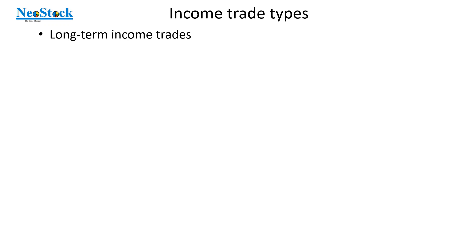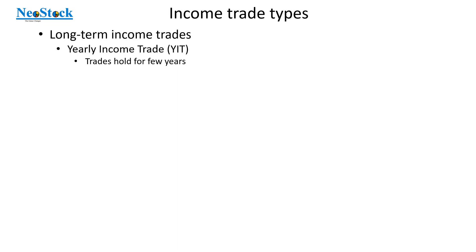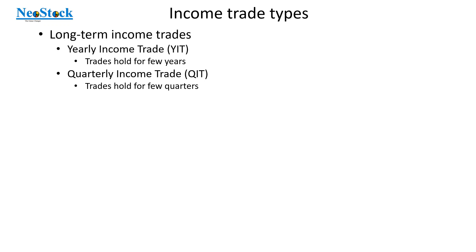Let us look into the long term income trades. Under long term income trades, we have different types. One is yearly income trade — in short, YIT — where trades hold for few years. The next one is quarterly income trade — in short, QIT — where your trades can hold for few quarters.